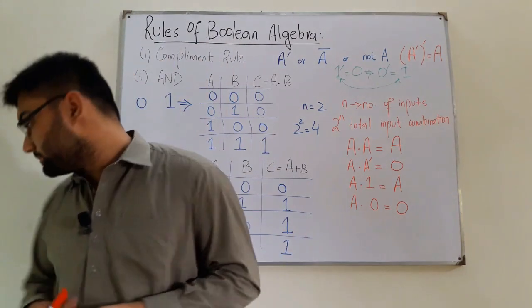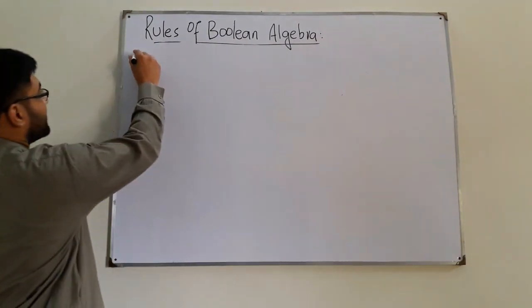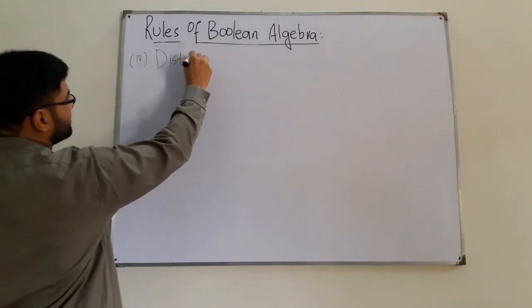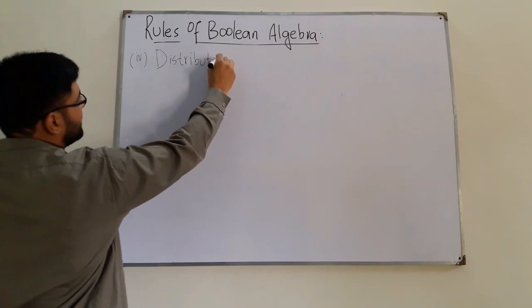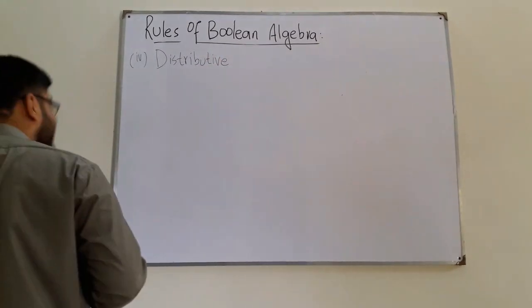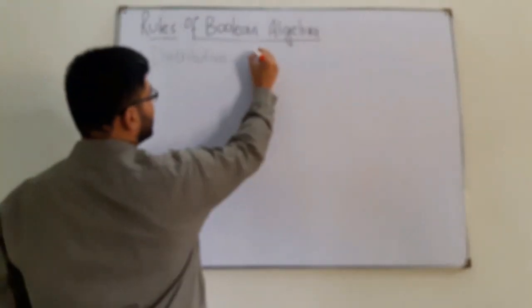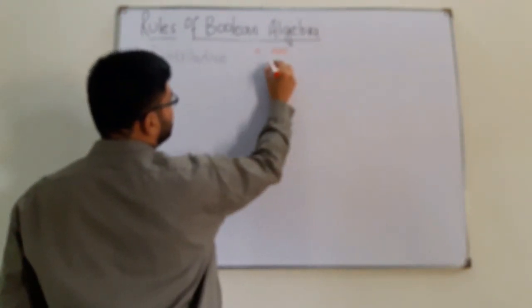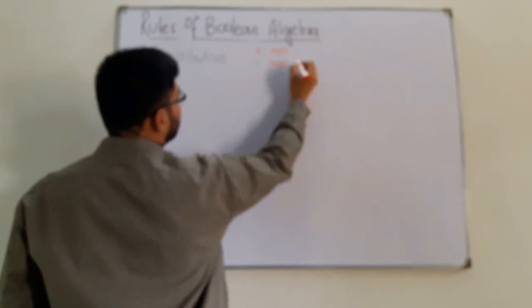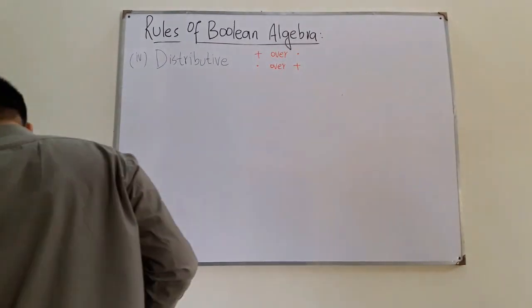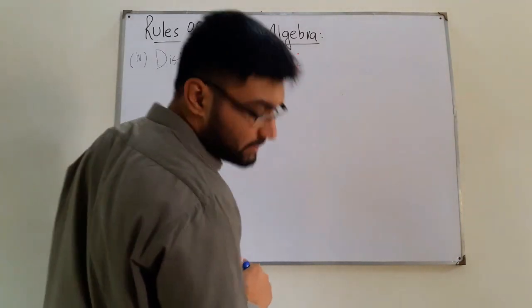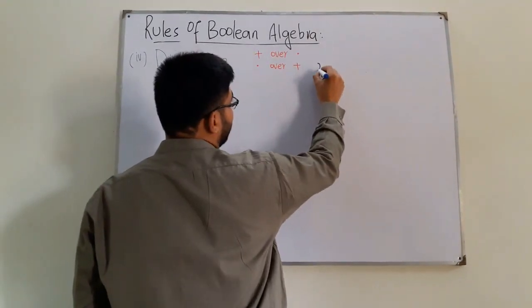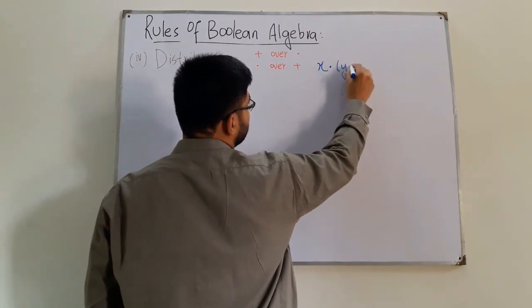The fourth property is the distributive law. The OR operation is distributive over AND, and the AND operation is distributive over OR. The first form: x·(y+z) = x·y + x·z. The second form: x+(y·z) = (x+y)·(x+z).